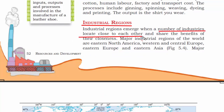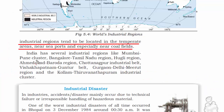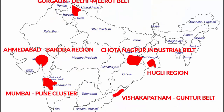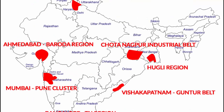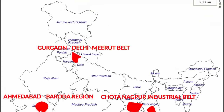The next topic is industrial regions. An industrial region is a place where a number of industries locate close to each other and share the benefits of their closeness. Some of the industrial regions of the world are eastern North America, western and central Europe, eastern Europe, and eastern Asia. Some of the industrial regions in India — I'll put all of this in a map, just have a look — include the Mumbai-Pune cluster, Bangalore-Tamil Nadu region, Hugli region, Ahmedabad-Baroda region, Chota Nagpur industrial belt, and others.